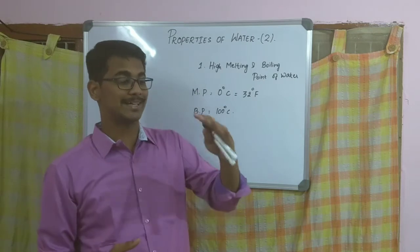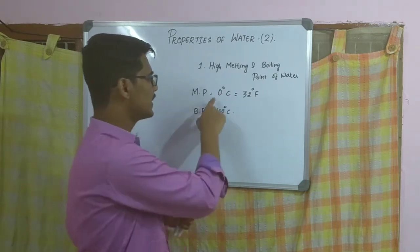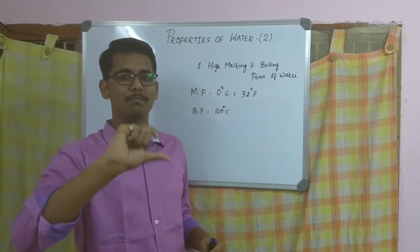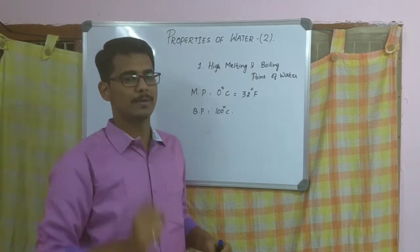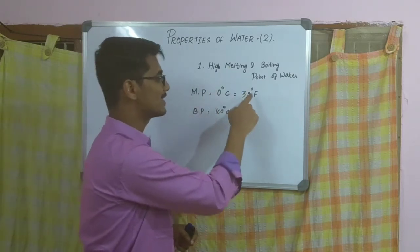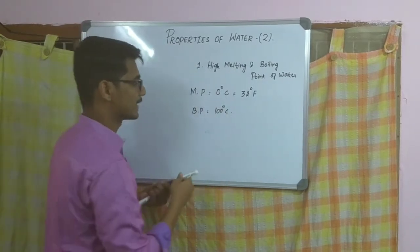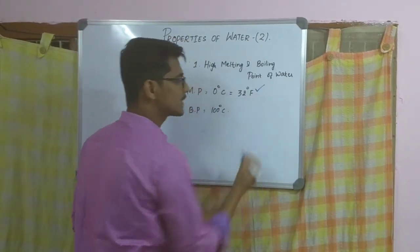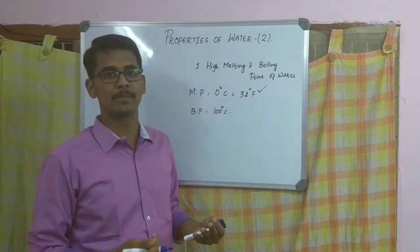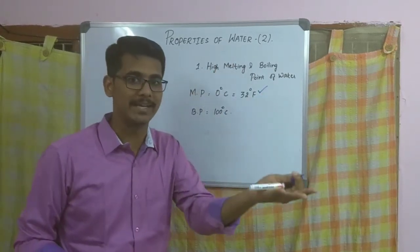Melting point is nothing but the temperature at which the ice melts. At 0 degree Celsius, the ice is getting melted — that is, it is converting to water. This 0 degree Celsius, when you consider it in Fahrenheit, is around 32 degree Fahrenheit, which is comparatively a high temperature. That is why we are calling it a high melting point.